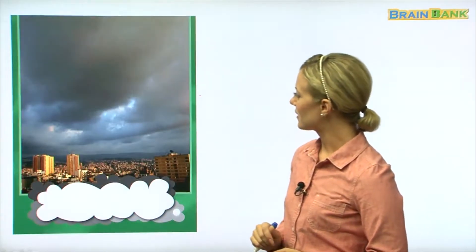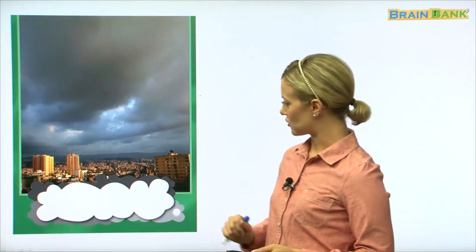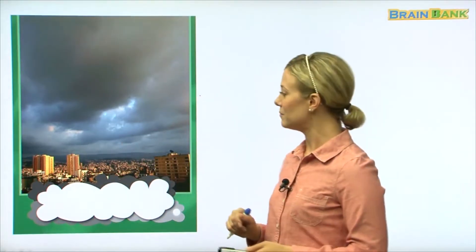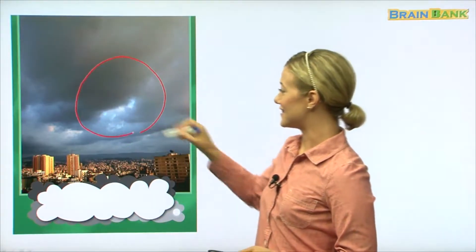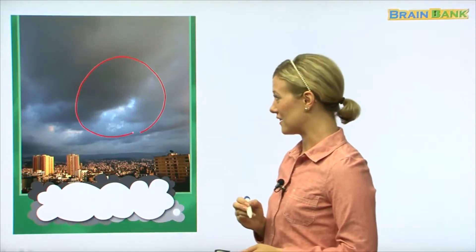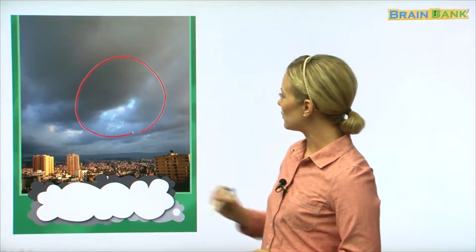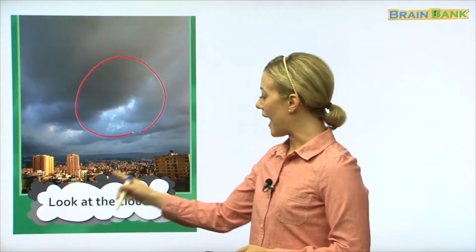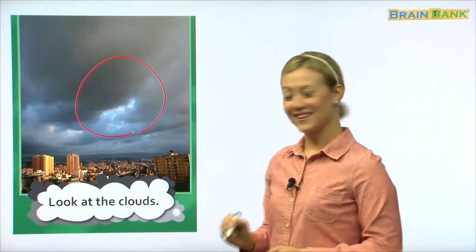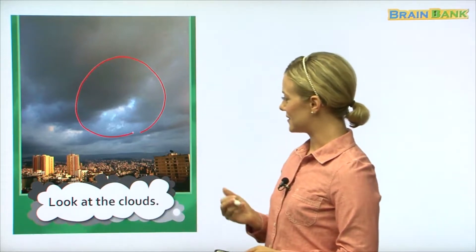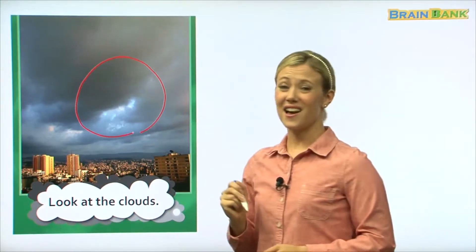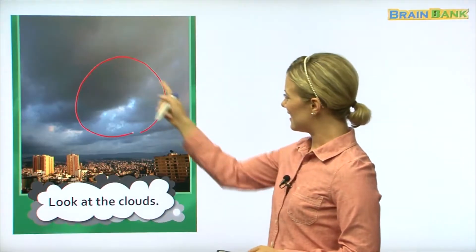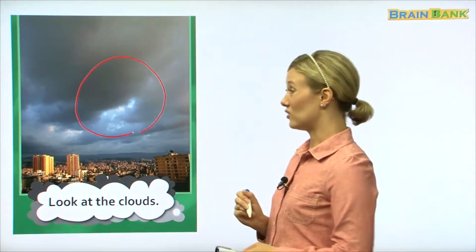So now here we have another picture. It looks like a big city again. What does the weather look like? Is it beautiful and sunny? No, not really. This is storm weather. Here we have dark clouds. Let's see what it says. 'Look at the clouds.' Can you read with me? 'Look at the clouds.' So as we said before, it is not a pretty sunny day. These clouds are very dark and it looks like it's going to rain or storm soon.